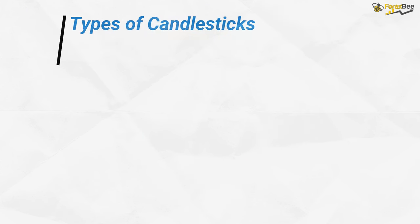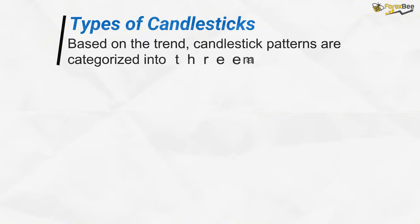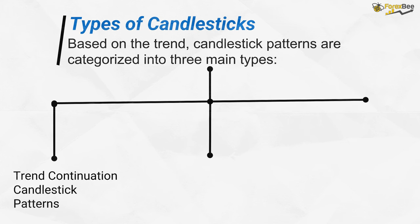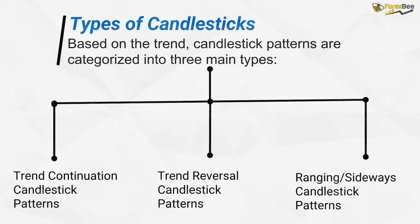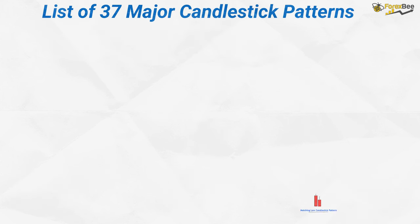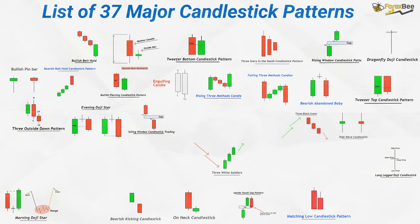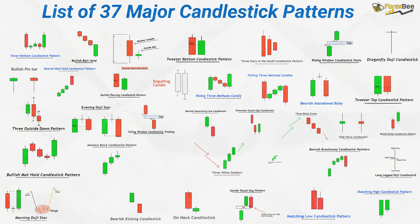If we talk about the types of candlestick patterns, then based on the trend, these patterns are categorized into three main categories: trend continuation patterns, trend reversals, and ranging or sideways candlestick patterns. In this video, we are going to cover all these categories in detail, so make sure to watch the video till the end.